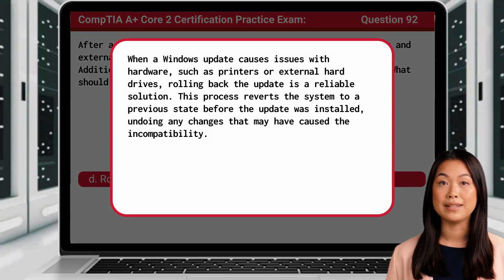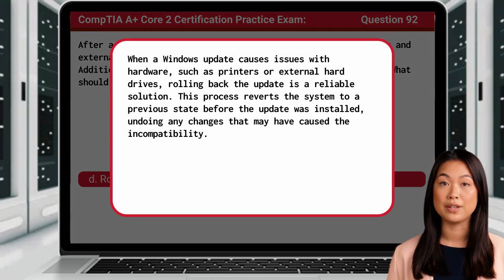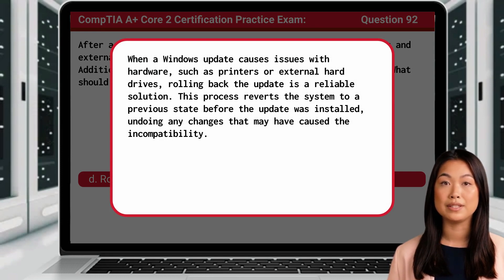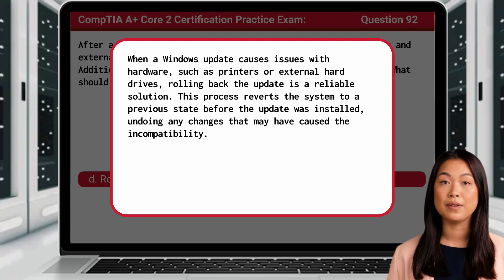When a Windows update causes issues with hardware, such as printers or external hard drives, rolling back the update is a reliable solution. This process reverts the system to a previous state before the update was installed, undoing any changes that may have caused the incompatibility.